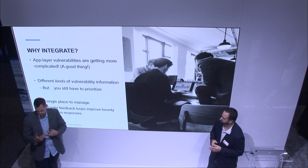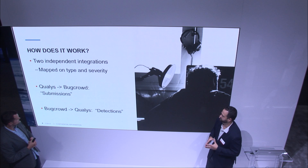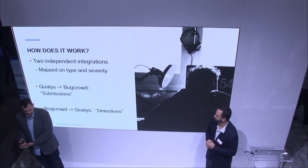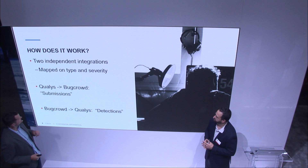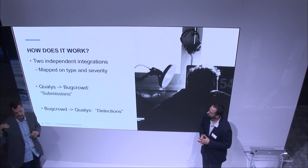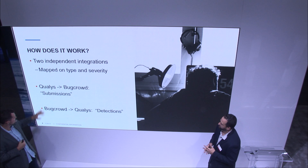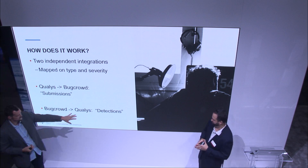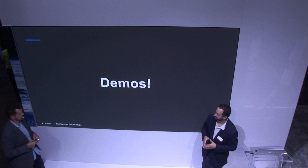You want to engage researchers and let them spend time learning your application. So how does this integration work? It's about information sharing — having vulnerabilities found in one platform available in another, so you can manage them in Qualys or duplicate against them in BugCrowd. We spent a bunch of time mapping our vulnerabilities to make sure we could speak a common language. We mapped on type and severity: a high severity issue that Qualys finds becomes a high severity issue in BugCrowd. An XSS in Qualys is an XSS in BugCrowd. From Qualys we get vulnerability information which we put into submissions, and on the Qualys side they get detections — mapping to say this is the same issue.